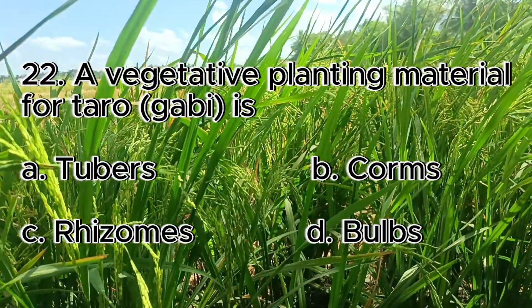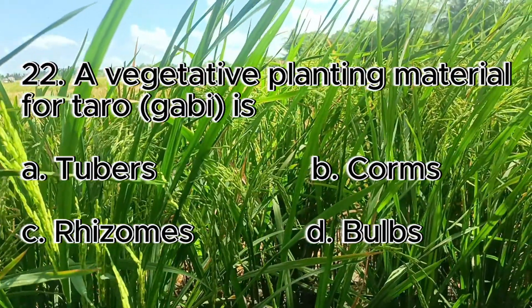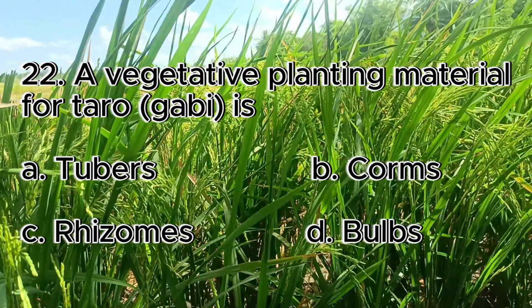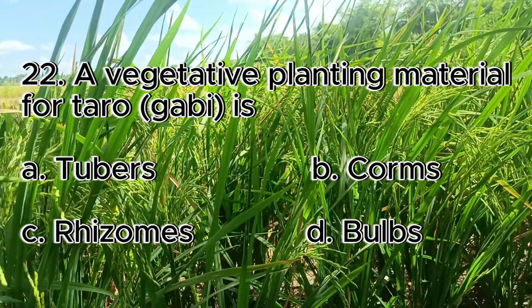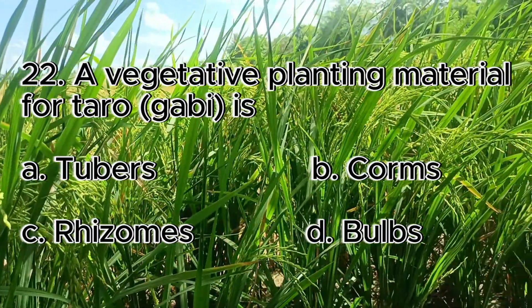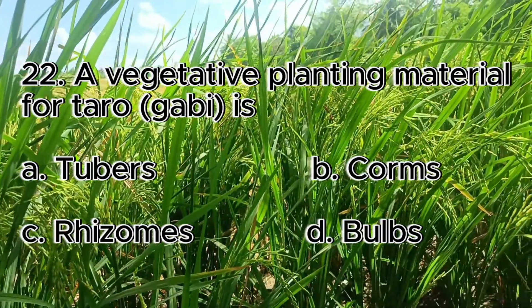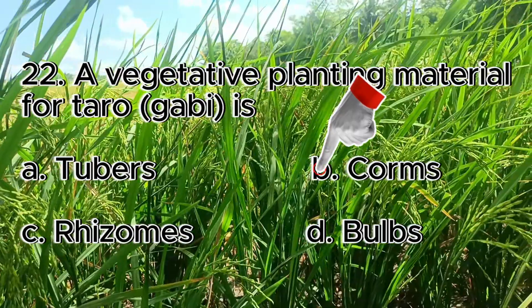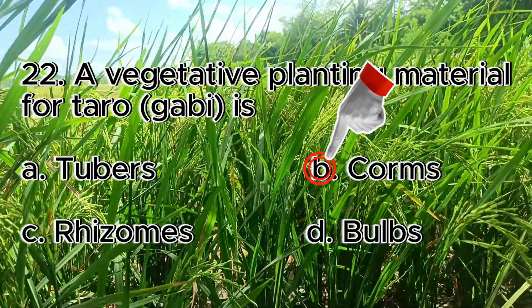Number 22. A vegetative planting material for taro (gabi) is? A. Tubers, B. Corms, C. Rhizomes, D. Bulbs. The answer is letter B, corms.